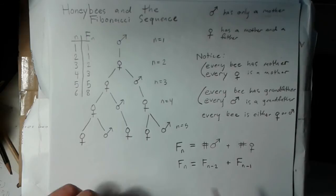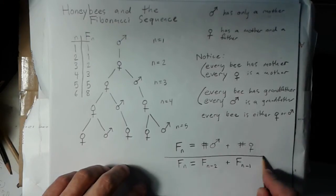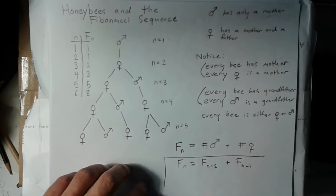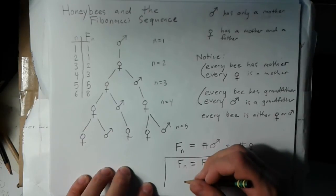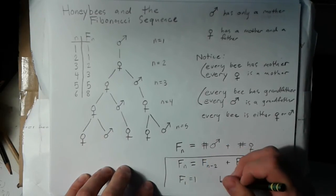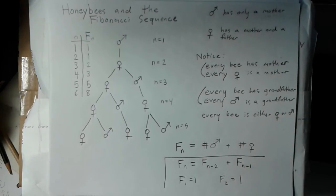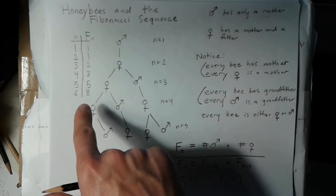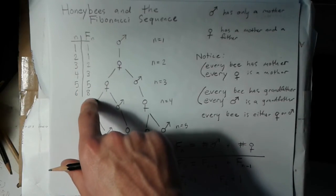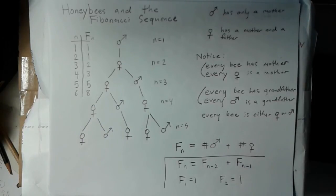This recurrence relation right here, together with two initial conditions which are that the first term is one and then the second term is also one, this is the definition of the Fibonacci sequence here. You might recognize these numbers from the Fibonacci sequence.